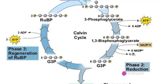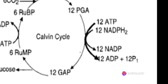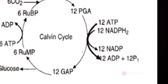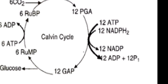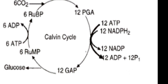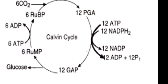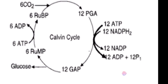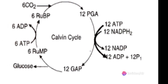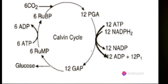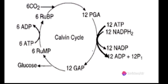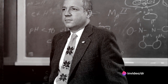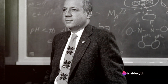Since glucose is a 6-carbon molecule, it takes 6 turns of the Calvin Cycle to make 1 carbohydrate molecule from CO2. Six cycles of the Calvin Cycle require 12 ATP and 12 NADPH in the reduction step, and 6 ATP in the regeneration step.